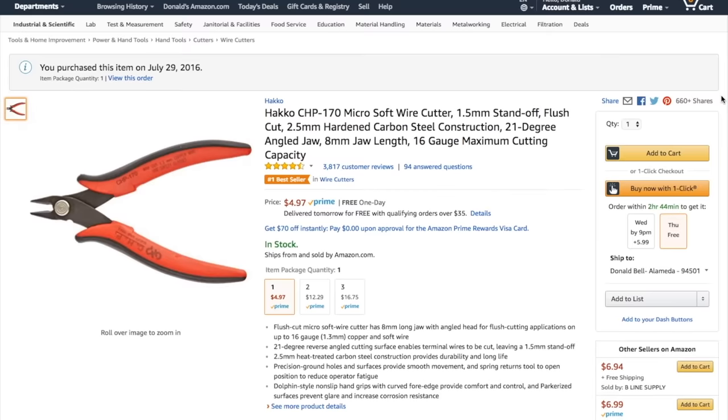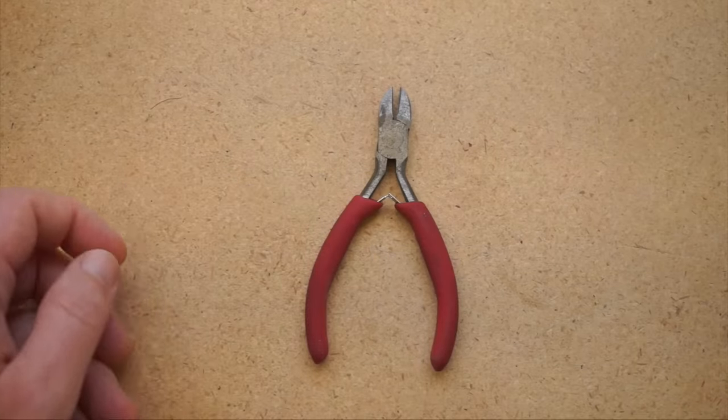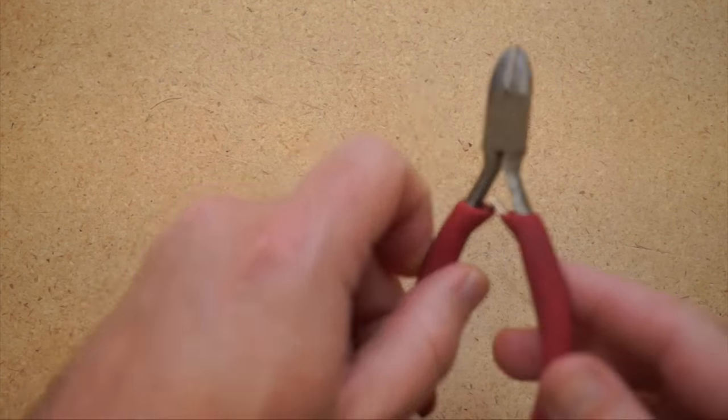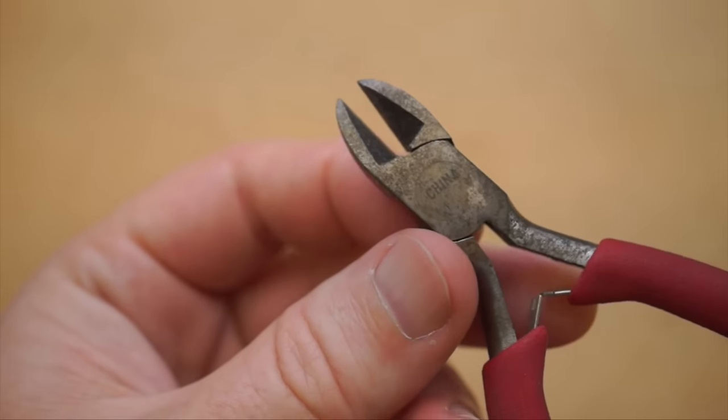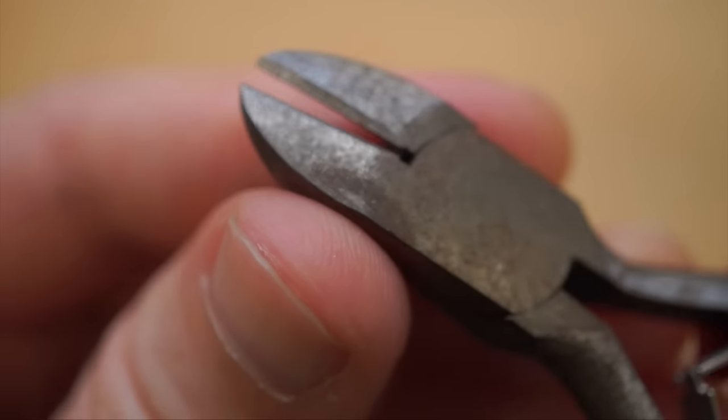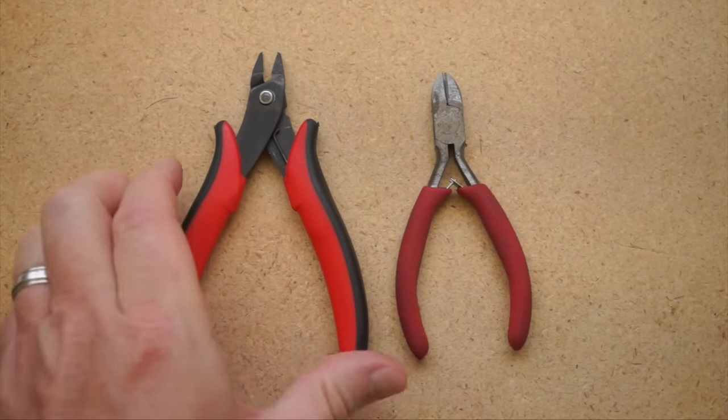Next up, my favorite flush cutters from Hakko. For more years than I care to admit, I would cut and trim wires and circuit leads using these generic wire cutters. They'd get the job done, but because the blades are somewhat recessed, you could never trim things completely flat. For that, you need flush cutters. And it's a subtle distinction.